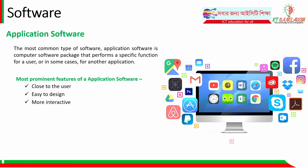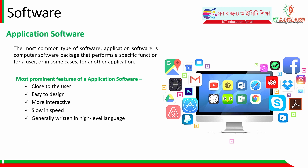Application software is more interactive. We can see the UI — user interface — like Photoshop or YouTube. Application software is generally slower in speed and written in high-level languages.